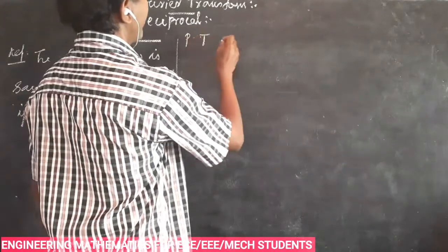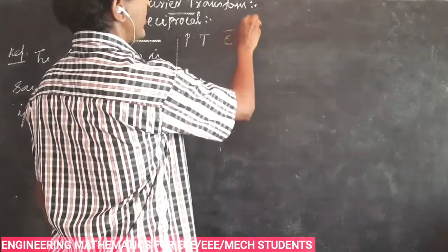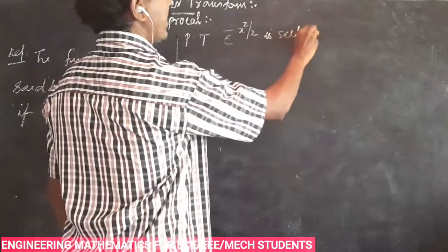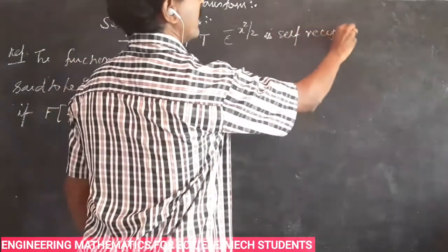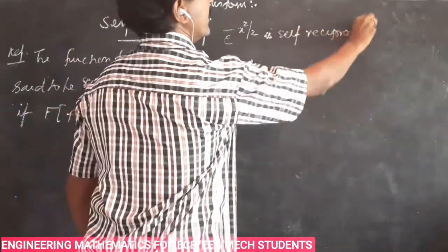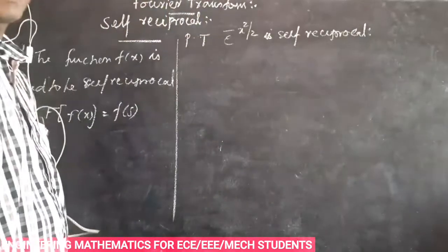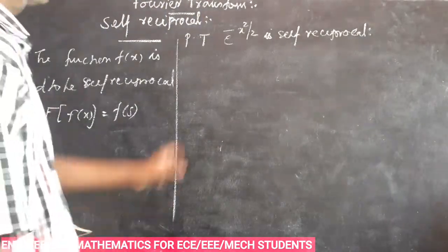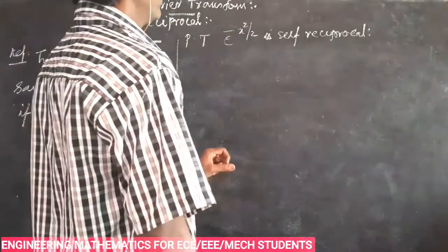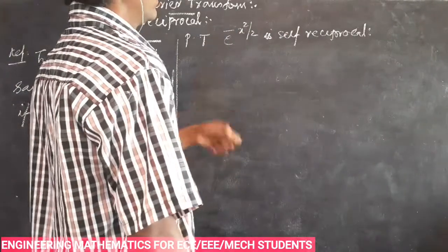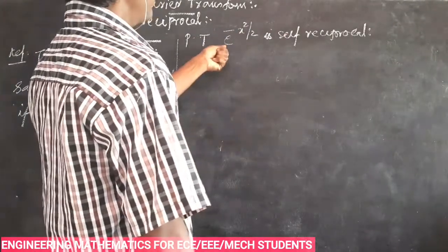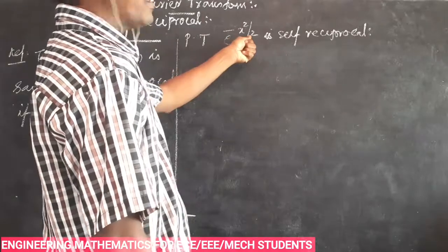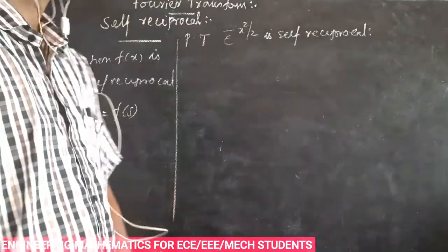Prove that e power minus x squared by 2 is self-reciprocal. The Fourier transform of e power minus x squared by 2 is e power minus x squared by 2.